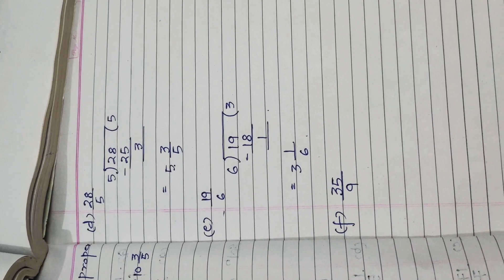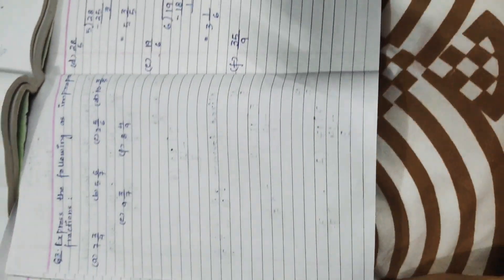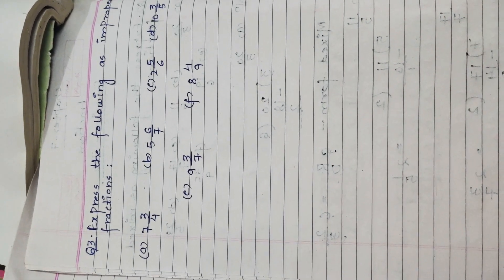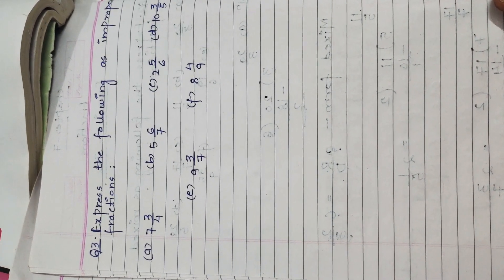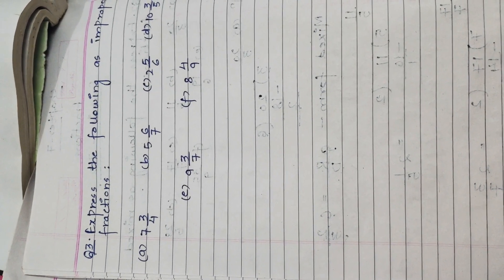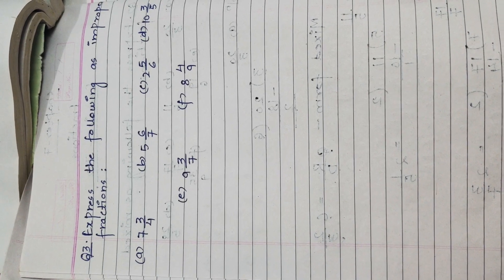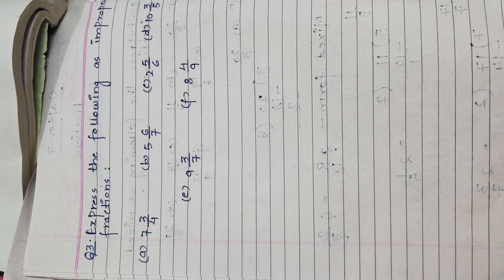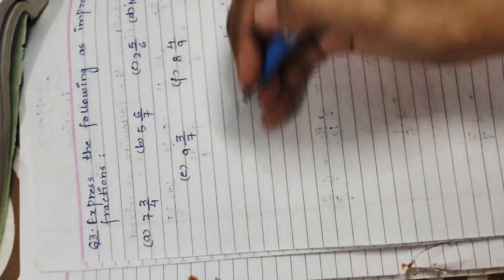Now let us come to question number 3, the last question of this exercise. The question says: express the following as improper fractions. Earlier they gave fractions in improper form and asked us to convert them to mixed form. This time the fractions are given in mixed form and we must convert them to improper form.